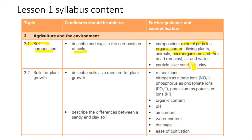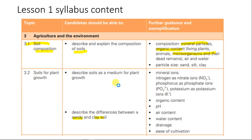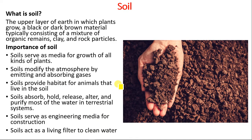We'll also look at particle size of sand, silt and clay, then move on to soil for plant growth, where we should be able to describe soil as a medium for plant growth and describe the difference between sandy and clay soil — looking at mineral ions, organic content, pH, air content, water content, drainage and ease of cultivation.